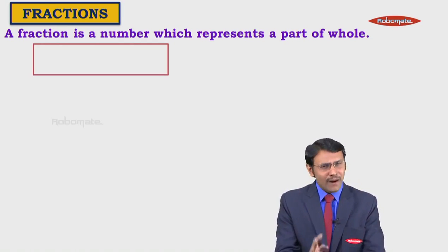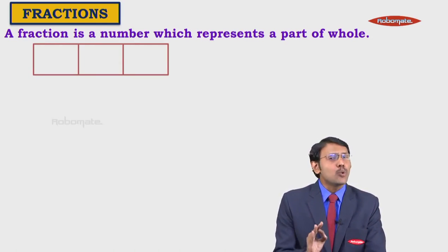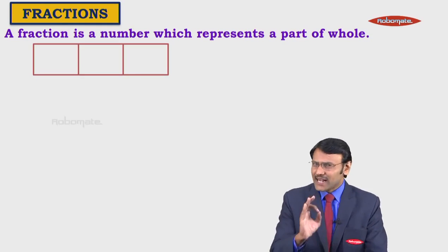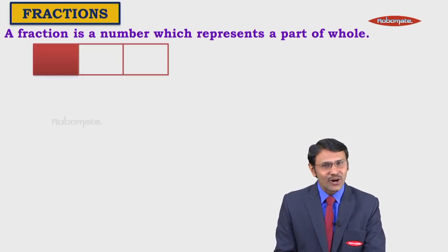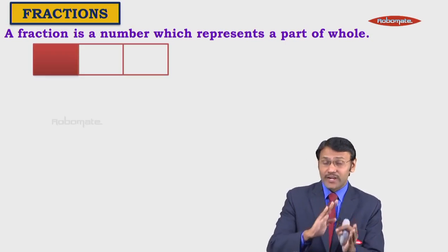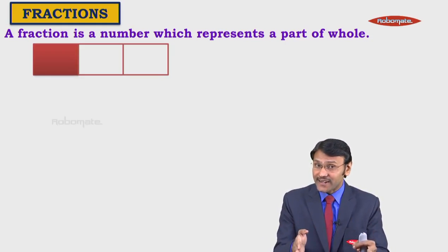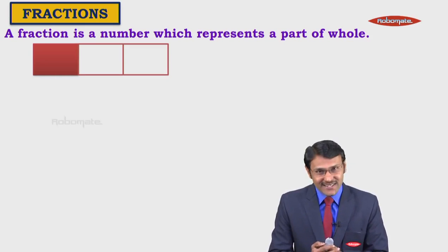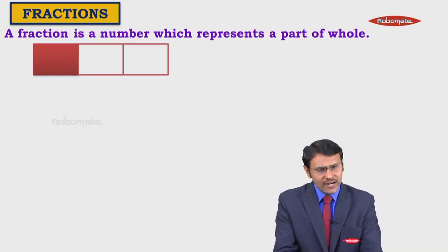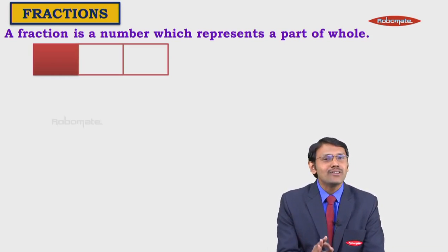This rectangular bar is a number which represents a part of whole — we have divided it into three equal parts. Let us highlight one part. Therefore it is one part of the whole which is divided into three equal parts. So here we can think of the fraction 1 upon 3.